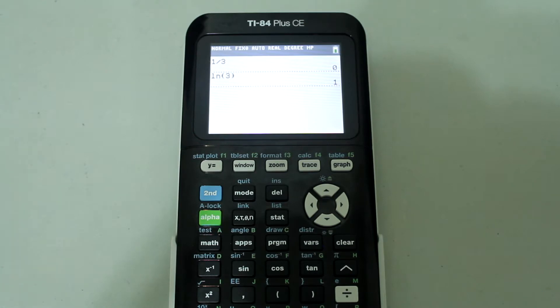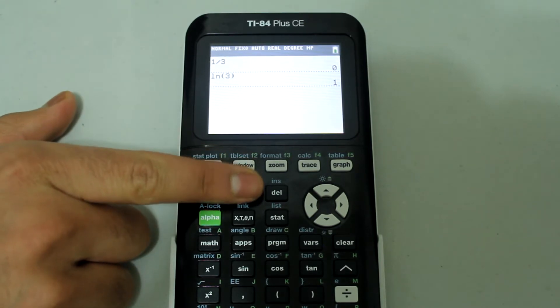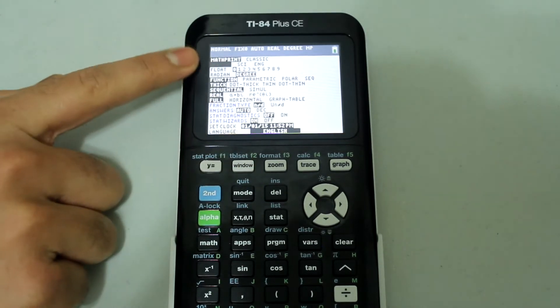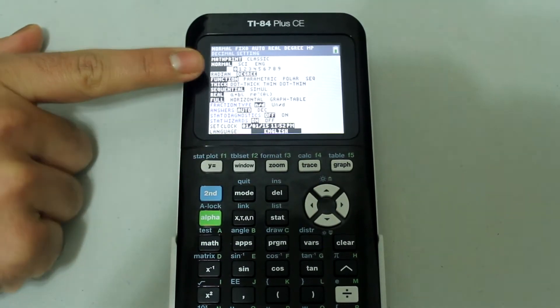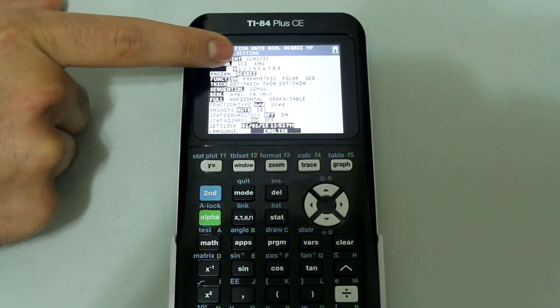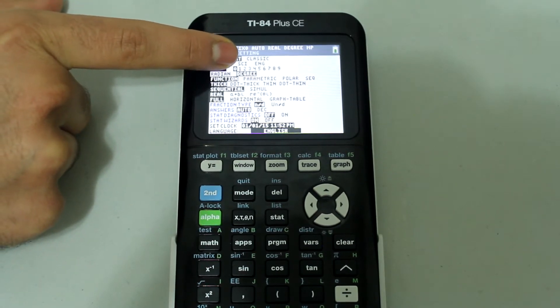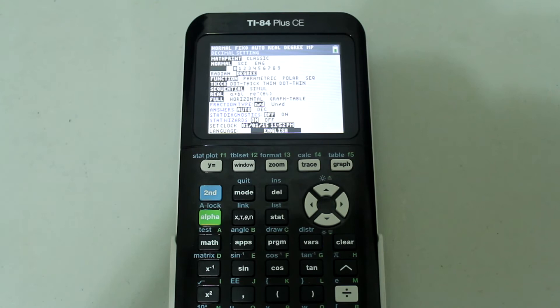To change that, press the mode button and arrow down until the cursor is highlighting on float. Right now, the option is set at 0, which means the calculator will round to the nearest whole number.